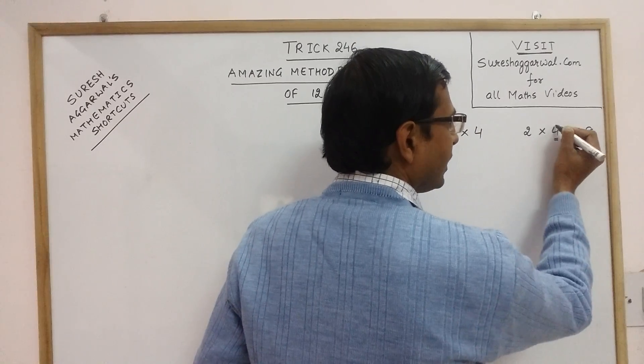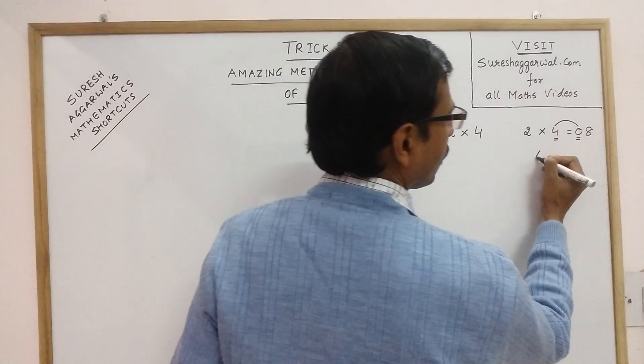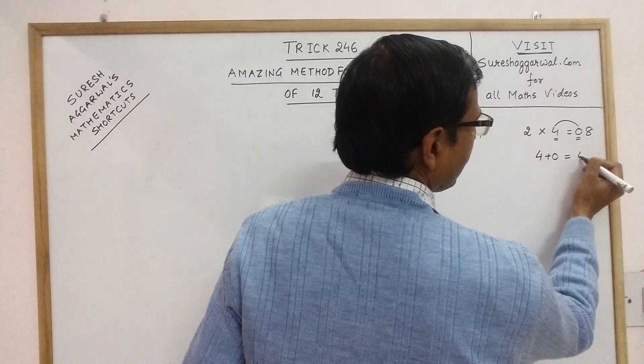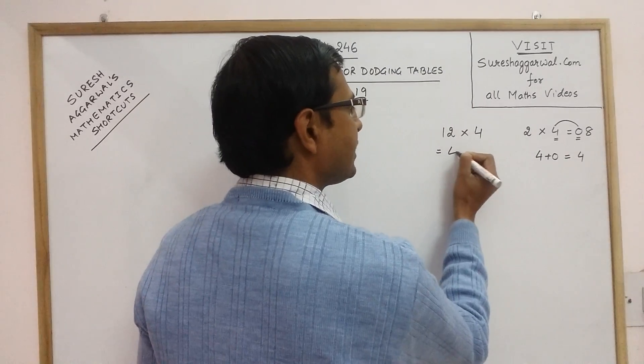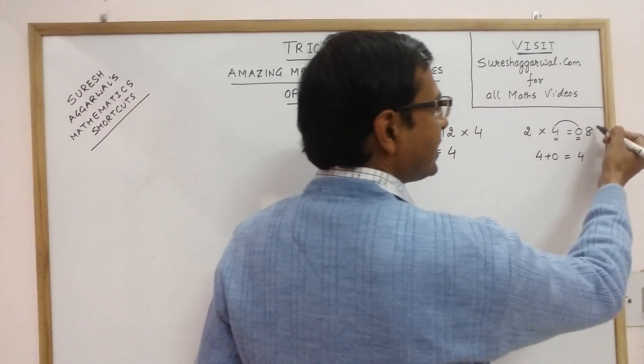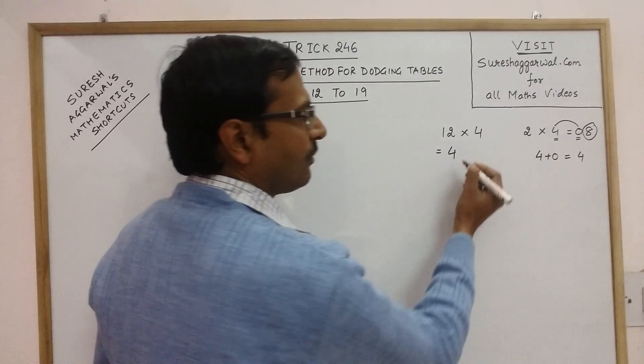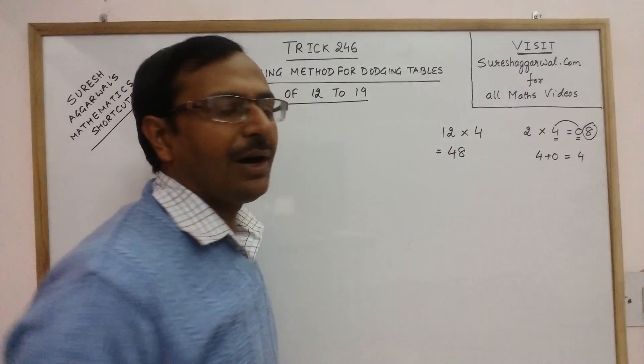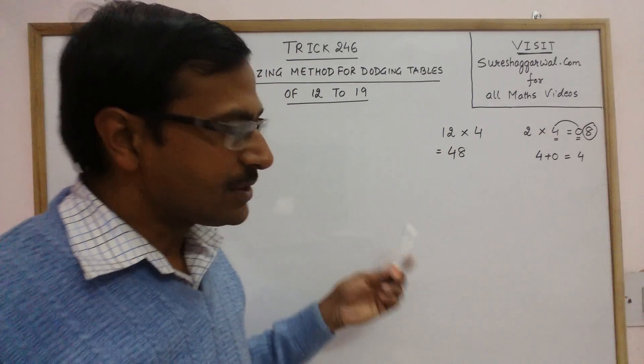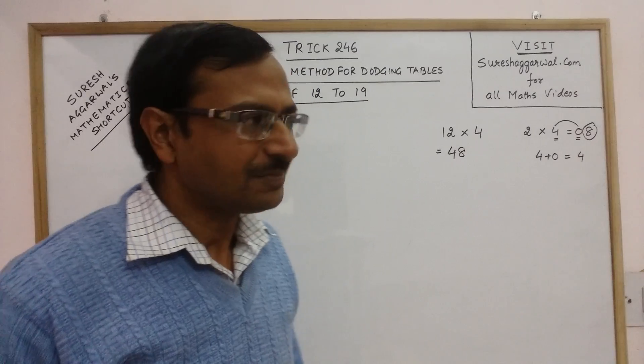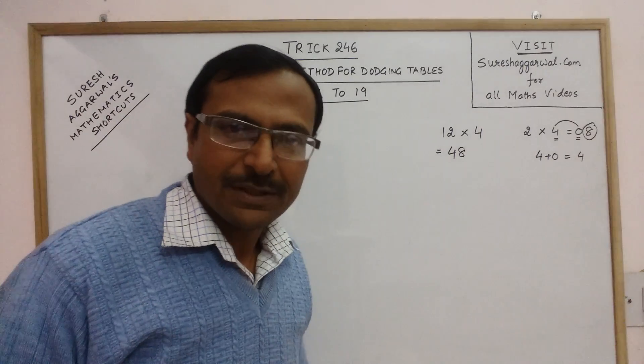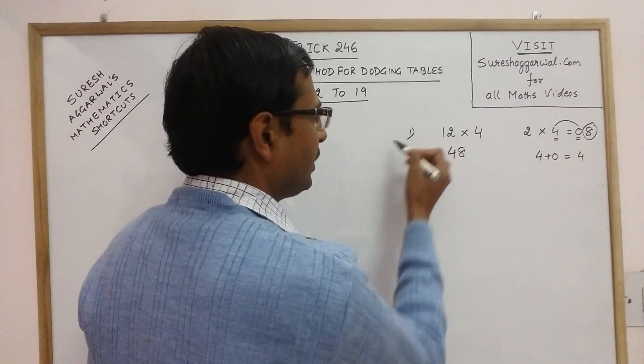So the in between numbers, they add this number, so 4 plus 0 that is 4. This is the first digit of the answer. And whatever is the last digit will give you the last digit of the answer. So 12 into 4 is 48. Now you can generalize this method on some other numbers. See this is the first example.